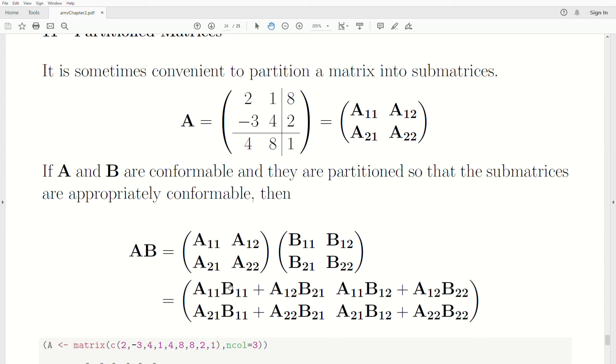And then the product, so this first entry here, if we take row 1 times column 1, we get this one. The A1 and B1. And then the A1, 2 and the B2, 1. That's what makes this up. Then we take row 1 times column 2, and we get this. Row 2 times column 1. Row 2 times column 2. And this is it. So this is a matrix product using partitioned matrices.